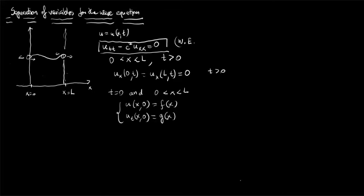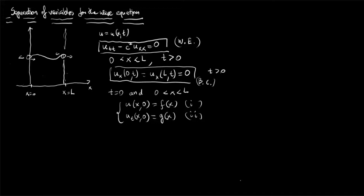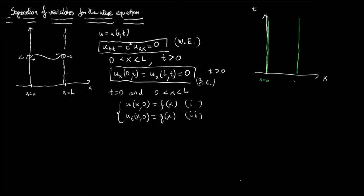The time derivative of the amplitude at t equals 0 is equal to a given function g of x. So we have our wave equation, our boundary conditions, and our two initial conditions. On the x-t plane, the boundaries are at x equals 0 and x equals L, where the x-derivative of the amplitude equals 0.